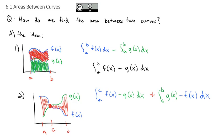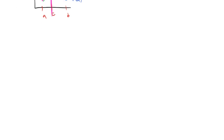Sometimes what we have to do is divide the graph into two parts and find the area of the left part separate from the area of the right part, then add them together, so that the top function is always positive and the bottom function is always negative. That's the theory. Let's work out some examples so we can get good at finding the area between two curves.